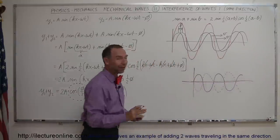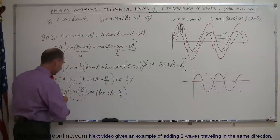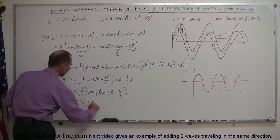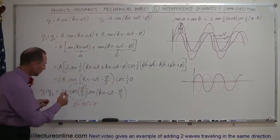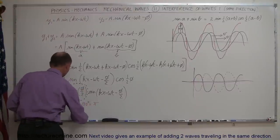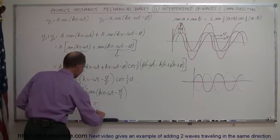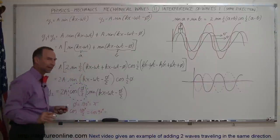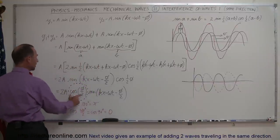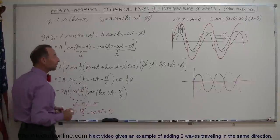If you add those two together, you get no wave at all — they completely cancel each other out. That's why we call this wave interference. This happens when phi equals 180 degrees, which is pi radians. If you plug 180 degrees into cosine(phi/2), you get cosine of 90 degrees, which equals zero. Therefore, the multiplication factor of the amplitude goes to zero, and the waves completely disappear.